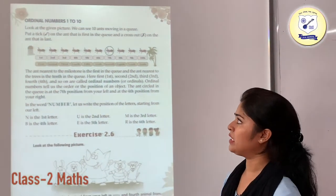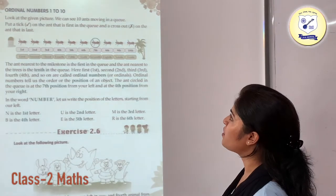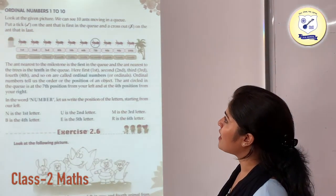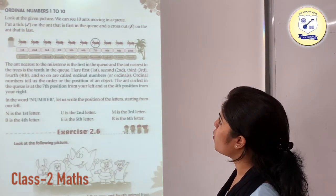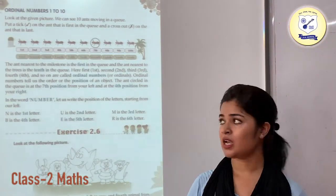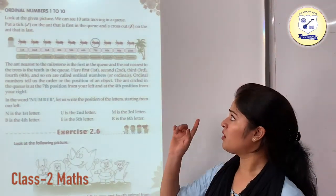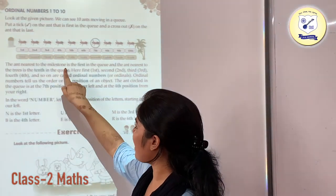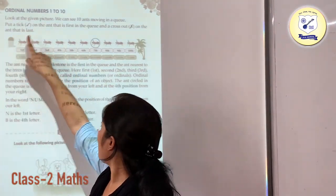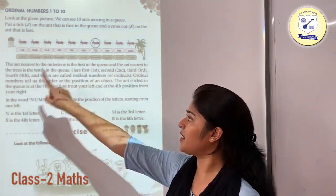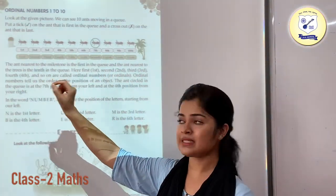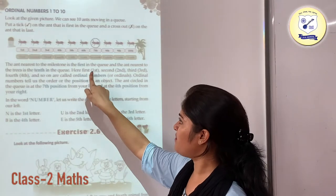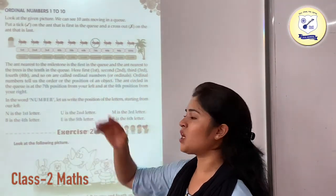Now ordinal numbers 1 to 10. Look at the given picture — we can see 10 ants moving in a queue, meaning in a line. Put a tick on the ant that is first in the queue and a cross on the ant that is last. You are going to put a circle on the first ant and a cross on the last ant. The ant nearest to the milestone is the first one and the ant nearest to the tree is on 10th place — that is your last one. First, second, third, fourth and so on are your ordinal numbers.